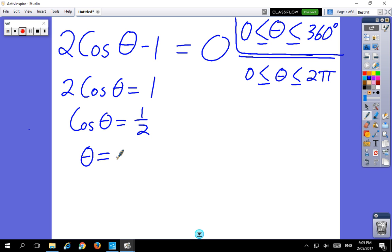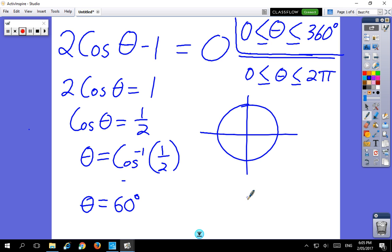θ then will equal cos to the negative 1 of a half. Now, you can chuck that straight into your calculator, and your calculator will say that this is 60 degrees. And that's wonderful, except we're not 100% sure yet whether that is our answer, because we must check with the unit circle. What does the unit circle tell us? Well, see at this point back here, we had cosθ equals 1 on 2. It's positive 1 on 2.